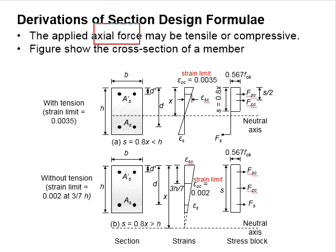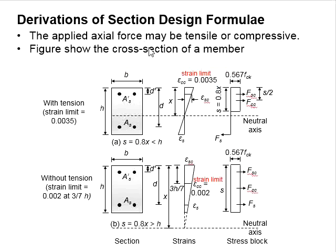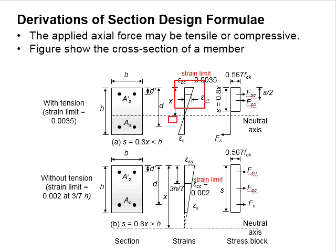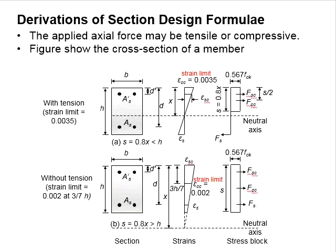Under the axial force, there are two possibilities. The column can be in full compression, or there could be a combination of compression and tension stresses in the cross-sections. When the neutral axis is within the cross-section of the column, we expect compressive and tensile stresses. When the neutral axis falls beyond the cross-sectional area, the entire section is subjected to compressive force.